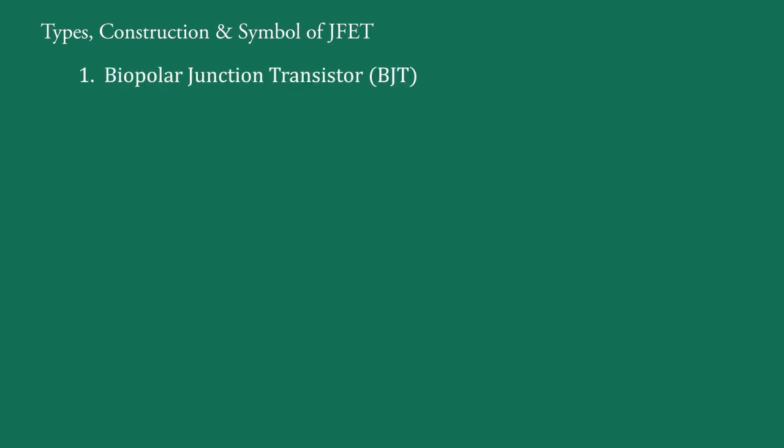Today, we will discuss types, construction and symbol of JFET. Transistors are mainly of two types: 1. Bipolar Junction Transistor, i.e. BJT, and 2. Field Effect Transistor, i.e. FET.